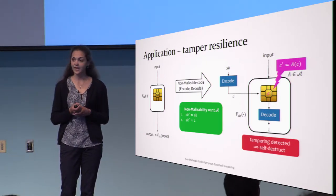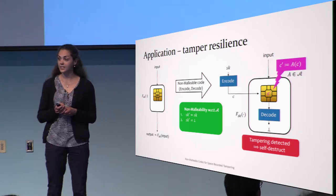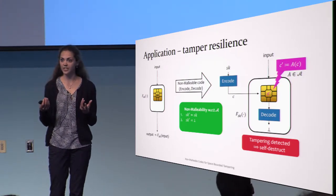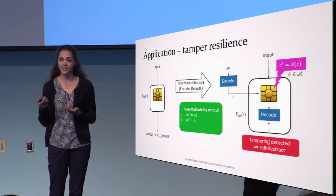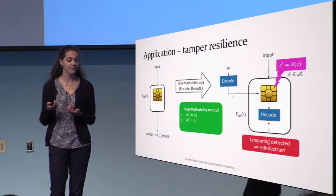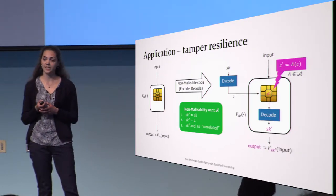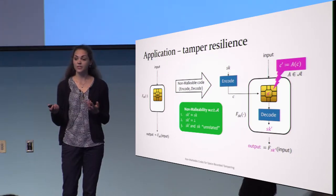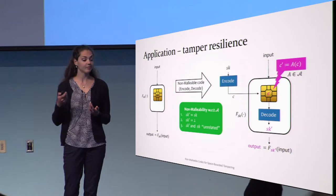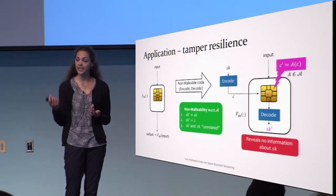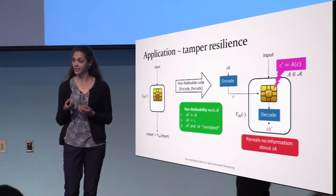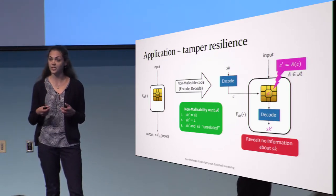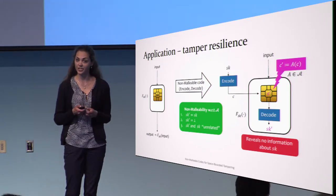In the second case, C' is an invalid codeword, in which case the tampering was detected and the device would typically self-destruct. And the third option is that SK' and SK are unrelated, in which case the input-output behavior doesn't reveal any information about the secret key. This is the high-level idea of why non-malleable codes can protect against memory tampering.